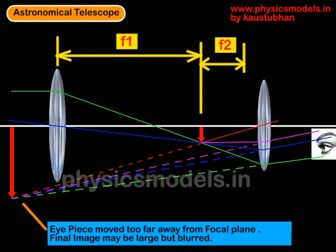Now if we move the eyepiece too far away from that ideal point, we will still get an image as shown here. The image may even be larger than the previous image but it could be very blurred because we are not at the meeting point of the focal point. The f2, when started from this new position of the eyepiece, will fall much shorter than the original position.